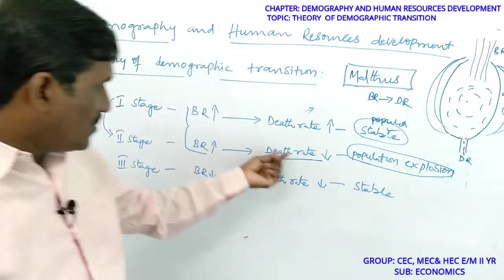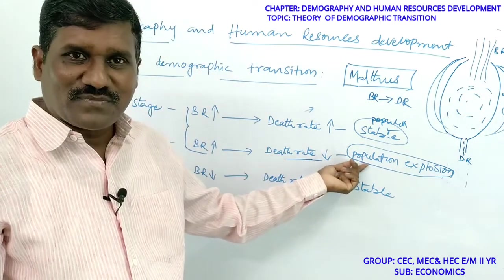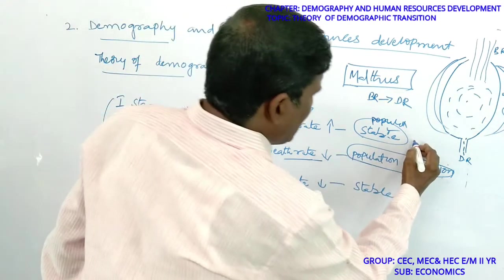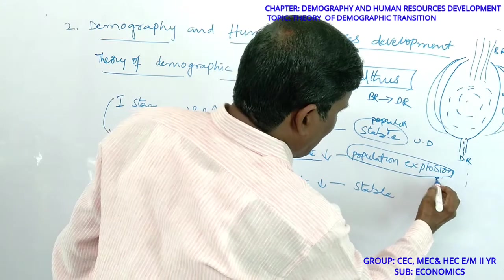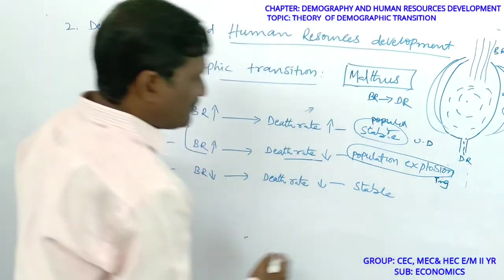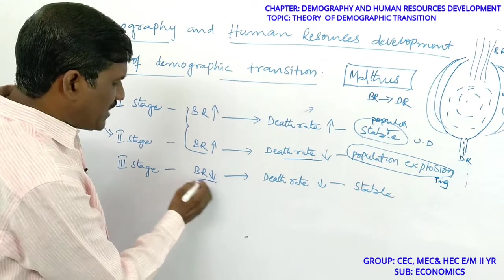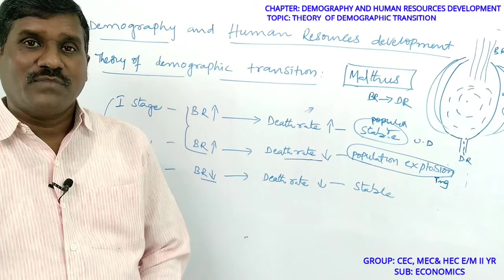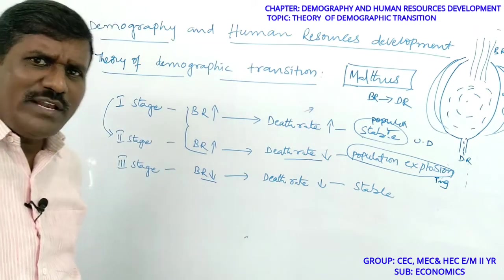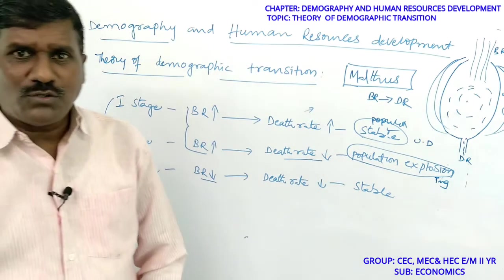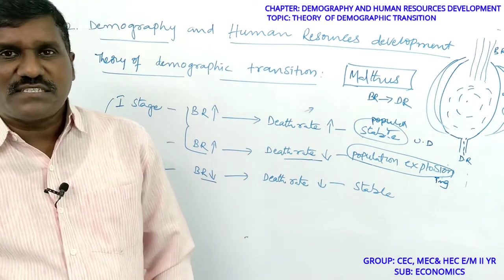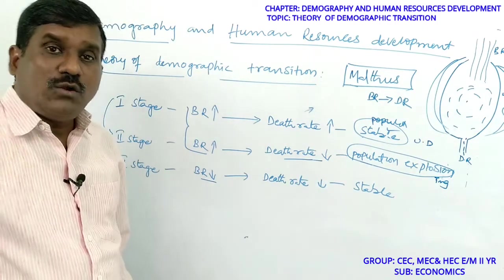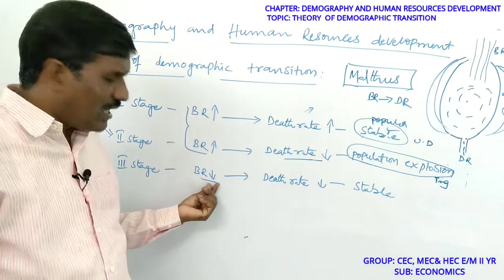The first stage represents underdeveloped countries and the second stage represents developing countries. In the third stage, birth rate is very low because most people are educated, they know how many children to maintain, and they want to maintain small families — so birth rate is very low.